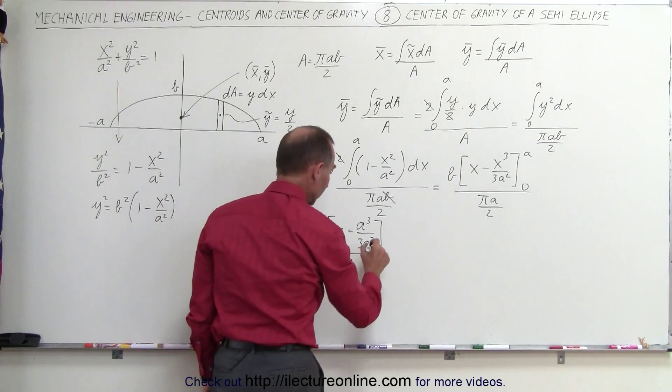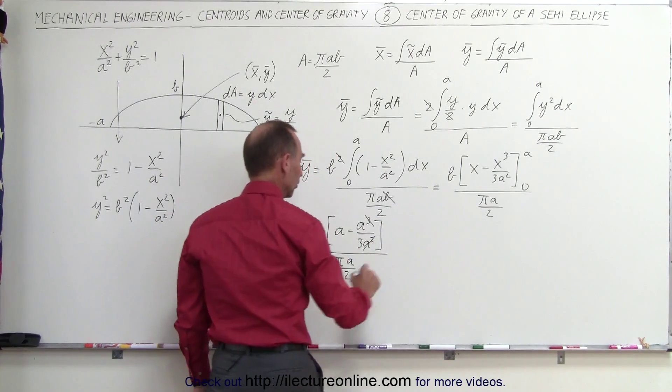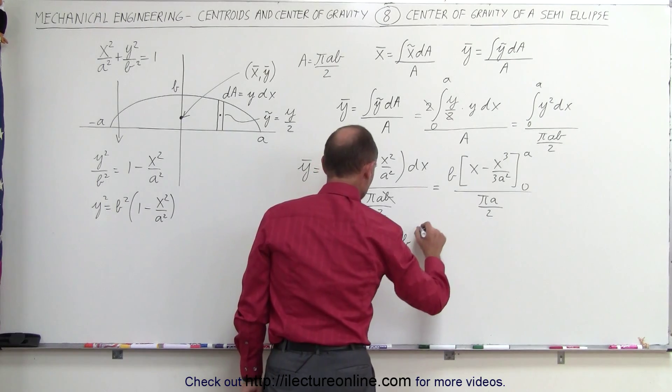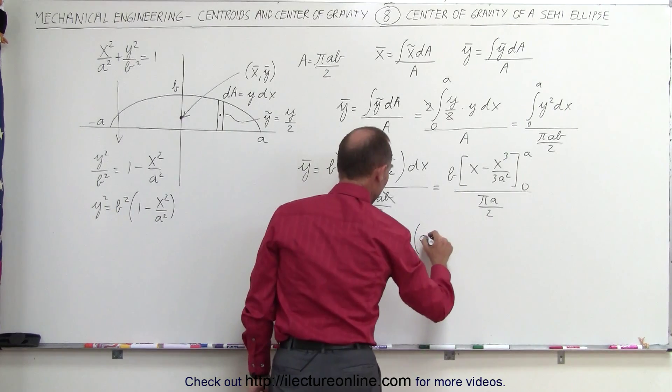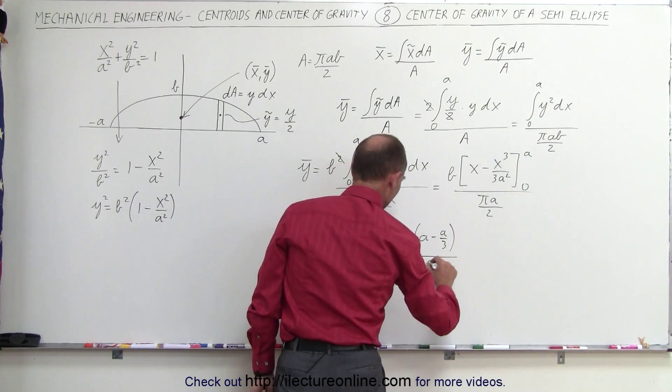Simplifying it a little bit more, the a² here cancels out two of the A³. We end up with b times, that would be A minus A over 3, divided by πA over 2.